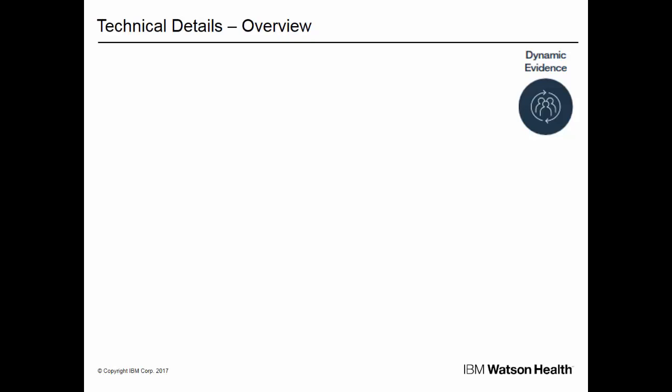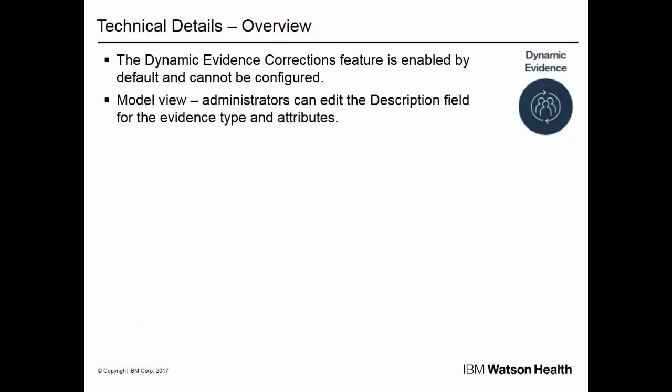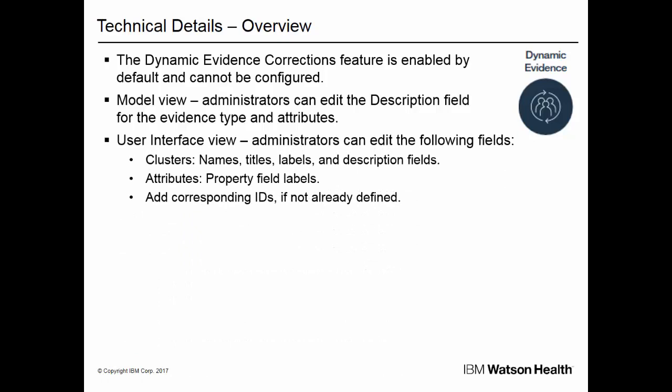Now let's discuss some of the technical details behind the enhancement. In the model view, administrators can edit the description field for the evidence properties and the description field for the attribute properties. Attribute properties are available for different attribute types, such as data attribute, calculated attribute, address attribute, and related participant attribute. In the user interface view, administrators can edit the text fields for clusters. The name of the text fields varies depending on the type of cluster, such as attribute cluster properties, comments cluster, and address cluster. The text fields are names, titles, labels, and description.